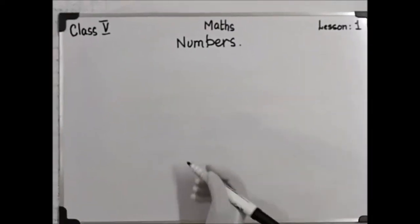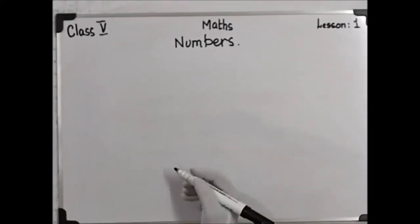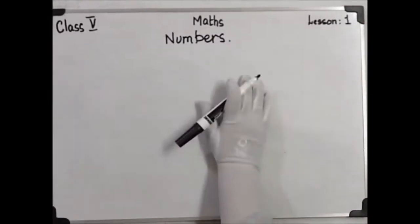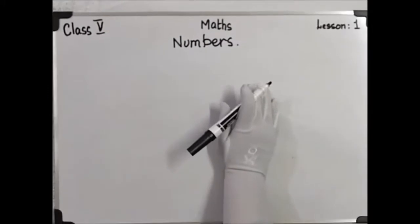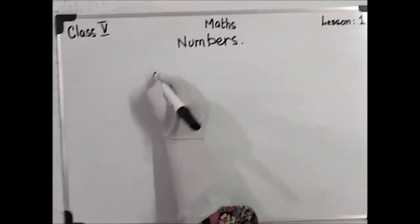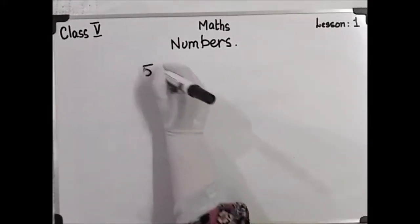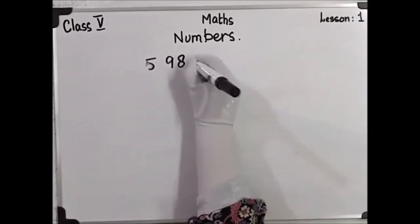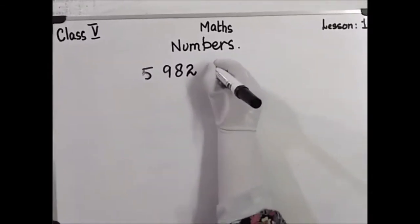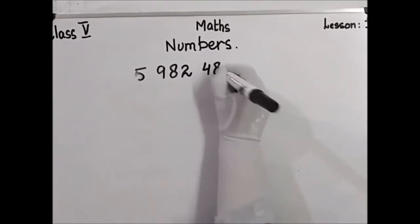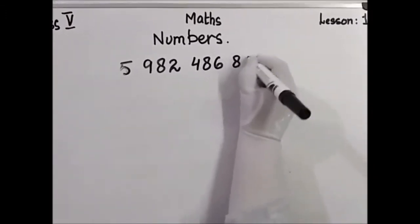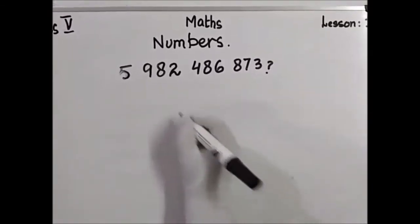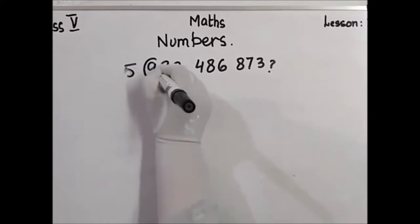If we want to know the place value of the ring digit in a 10-digit number, how do we find it? If the number is 5, 9, 8, 2, 4, 8, 6, 8, 7, 3 — and the ring digit is 9.